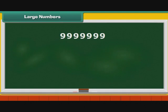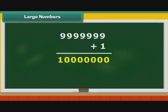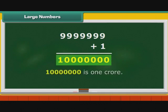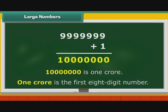Let us look at the largest seven-digit number that you learnt in class 4. It is nine written seven times: 99,99,999. Now, add one to the number. What do you get? One followed by seven zeros. This number is known as one crore.